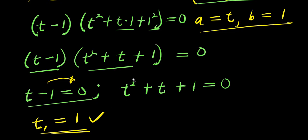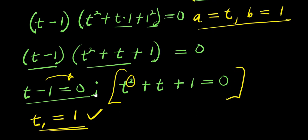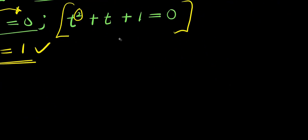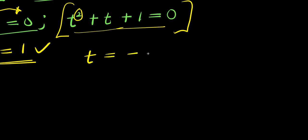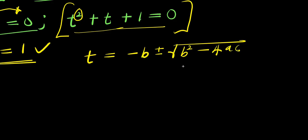Now if you observe, we have a quadratic equation here because the exponent is 2. In solving this quadratic equation, there are methods we can use: completing the squares method, formula method, and factorization method — but this is not factorizable. So let's make use of the formula method. The formula, in respect to t, is: t equals negative b, plus or minus square root of b squared minus 4ac, divided by 2a.